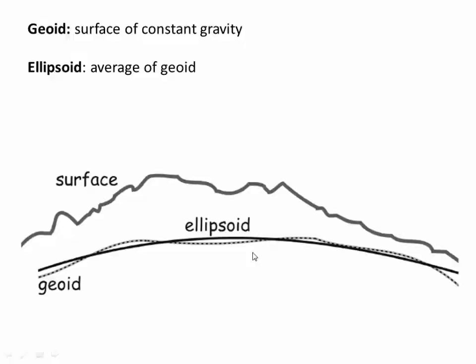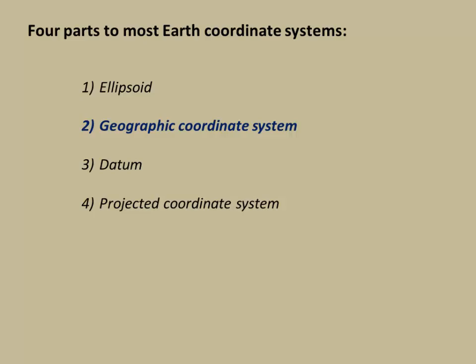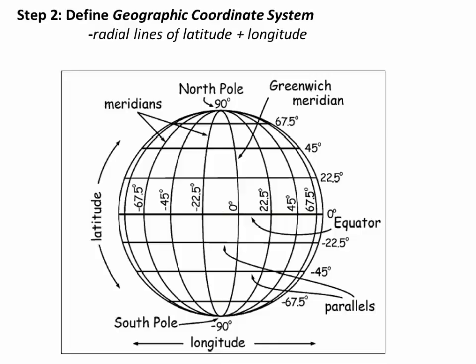Now that we know the size and shape of Earth, how do we break it into an evenly spaced grid? This is done with lines of latitude and longitude. But like any coordinate system, the origin needs to be defined. The origin of this grid is given by the intersection of the Greenwich meridian — a line of zero longitude running through Greenwich, England — and the equator, defined as zero degrees latitude. This is the zero-zero point of the global coordinate system.